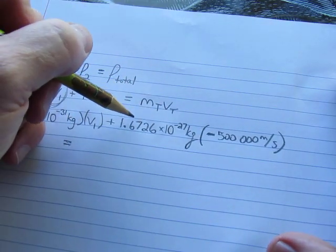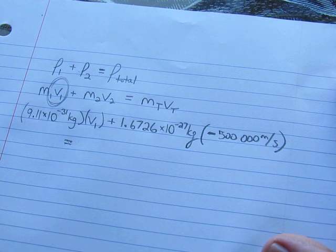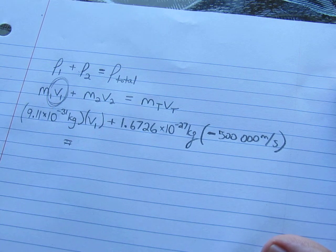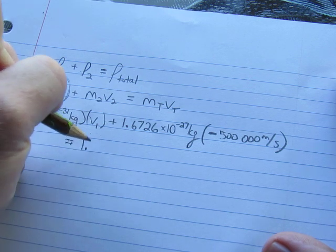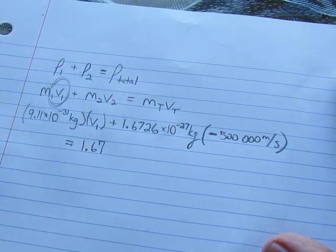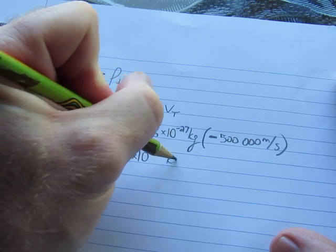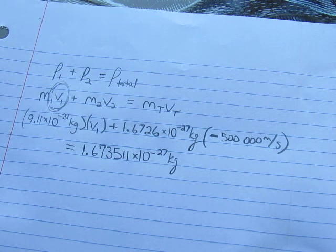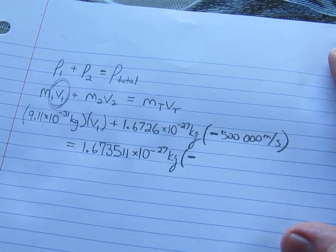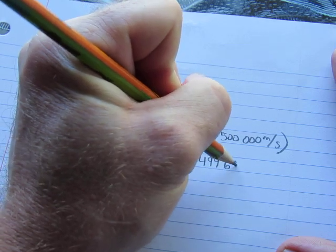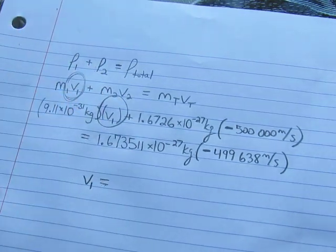That's the left hand side of the formula. On the right hand side after the collision the masses join together. 9.11 to the exponent negative 31 added with the proton 1.6726 to the exponent negative 27. They become one particle. It doesn't look very different than what a proton was before. Protons are so much heavier than electrons. The speed after these two combine is given, it's still traveling down, 499,638 meters per second.